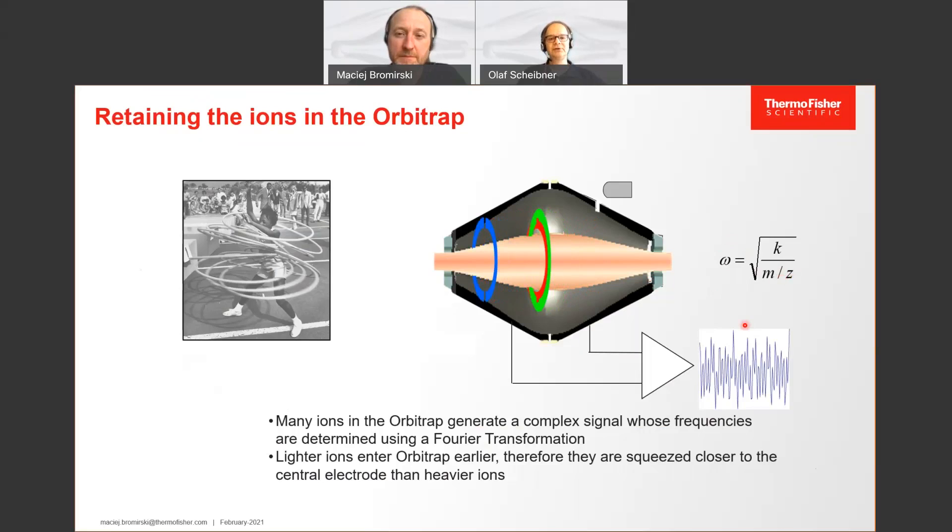The principle is known already from the former Fourier transform mass spectrometers, which were very bulky. You needed liquid nitrogen, liquid helium to maintain. And so you're rid of that with a very compact mass spectrometer with all the favorites of the most precise mass spectrometer you can buy.